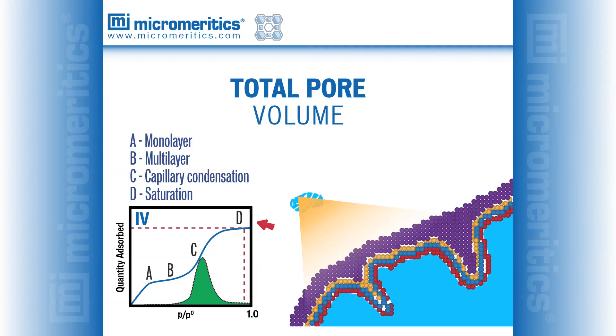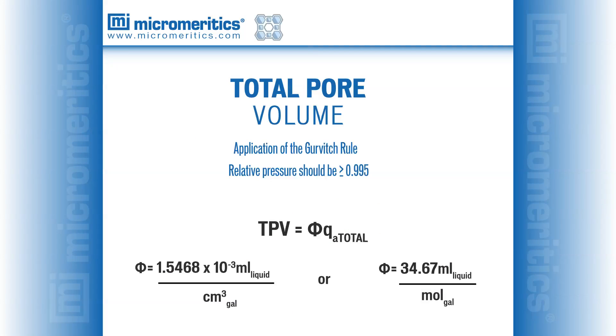At the end of the adsorption isotherm, as the relative pressure approaches unity, point D on this slide, all pores up to approximately 200 to 300 nanometers will be completely filled with liquid. The total pore volume of the solid can be determined by taking the cumulative volume from the y-axis of the adsorption isotherm and applying the Gurvich rule, which converts the quantity of gas adsorbed into its volume in liquid.